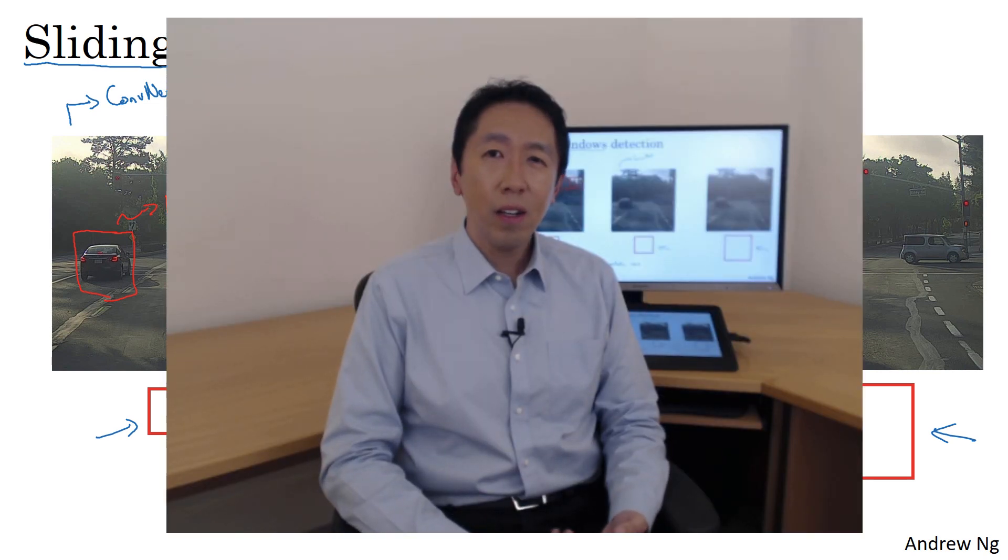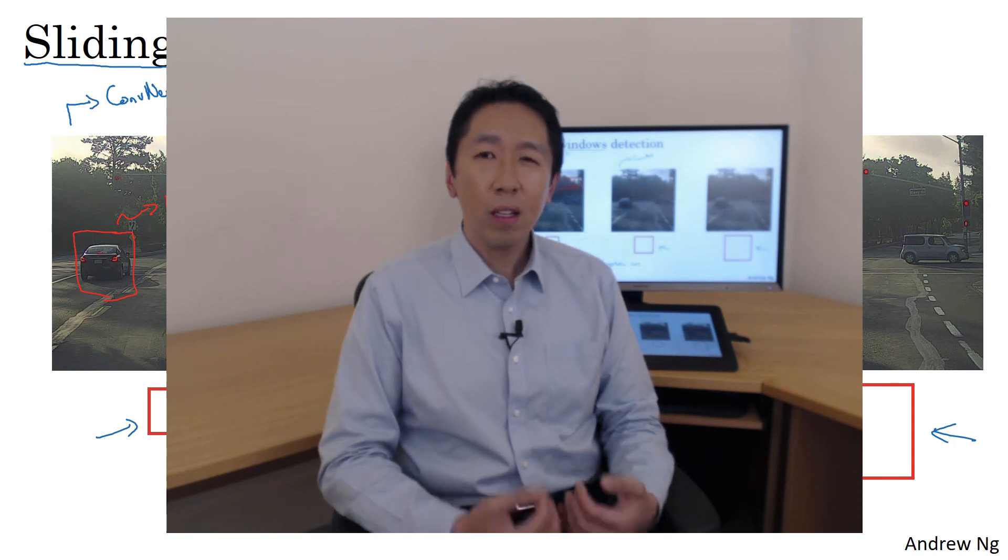Fortunately, however, this problem of computational cost has a pretty good solution. In particular, the sliding windows object detector can be implemented convolutionally, or much more efficiently. Let's see in the next video how you can do that.